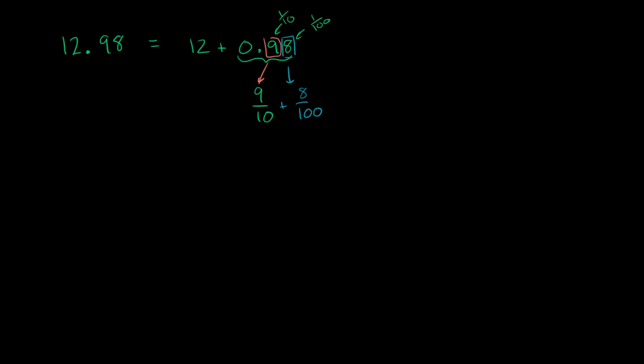And if you want to find a common denominator, that would be the same thing as 90 over 100 plus 8 over 100, which is equal to 98 over 100.